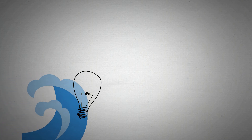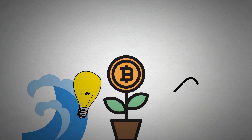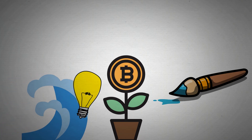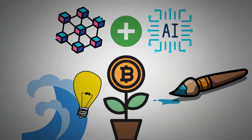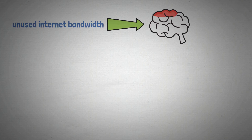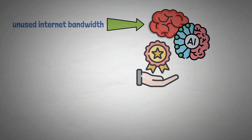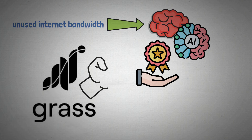A wave of creative solutions in the cryptocurrency space has been spurred by the combination of blockchain technology and artificial intelligence. By turning unused internet bandwidth into a useful resource for AI development and rewarding users, GRASS stands out among these new initiatives.